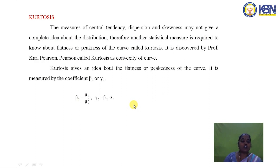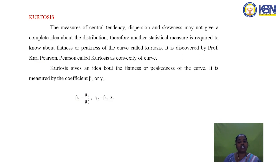The last concept is kurtosis. Measures of central tendency, dispersion, and skewness may not give the complete idea about the distribution, so another statistical measure is required to describe the flatness or peakedness of the curve, called kurtosis. It was discovered by Professor Karl Pearson and is also known as the convexity of the curve. The measure for kurtosis is β2 = μ4 / μ2², and γ2 = β2 − 3.